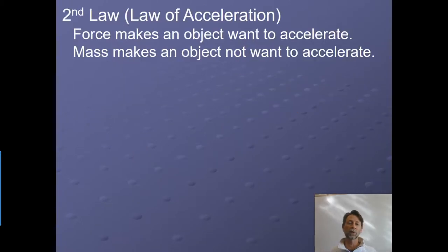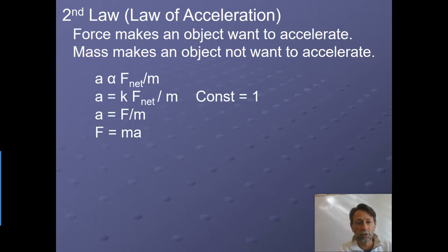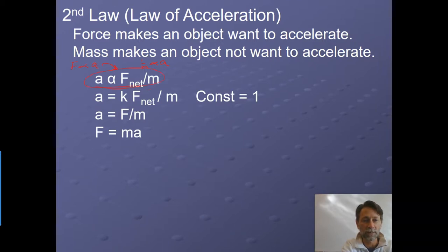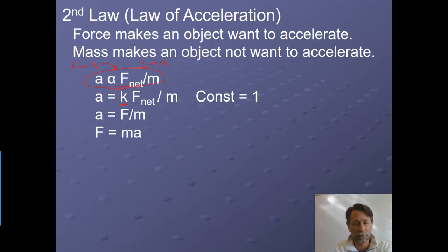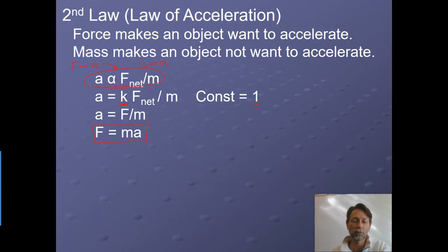If we put those two together, that's where we get Newton's second law. Force makes an object want to accelerate; mass makes an object not want to accelerate. We have force proportional to acceleration, and one over mass proportional to acceleration. Combining them, we turn the proportionality into an equality using a proportionality constant — which in this case equals one. So we get that acceleration equals force divided by mass, or rewritten: F equals ma — force equals mass times acceleration.